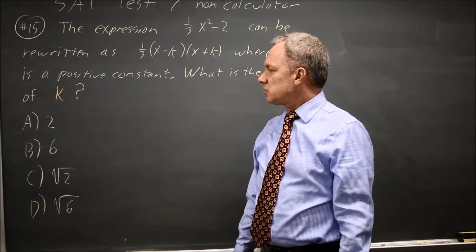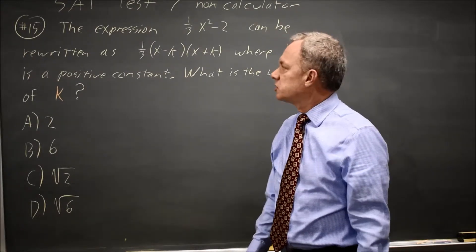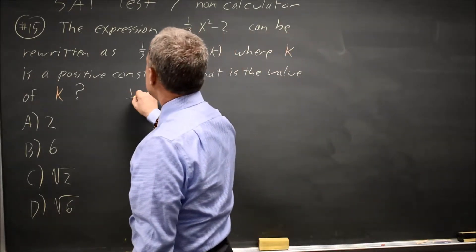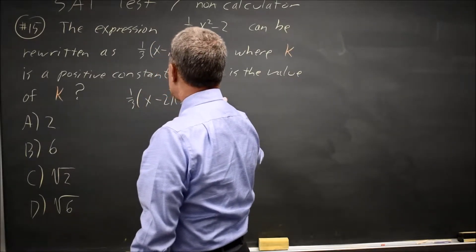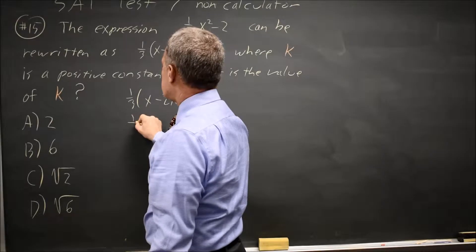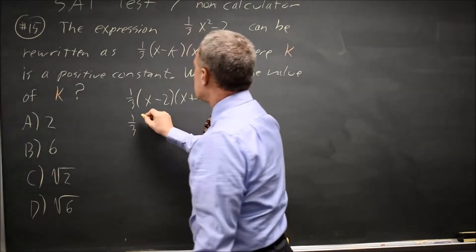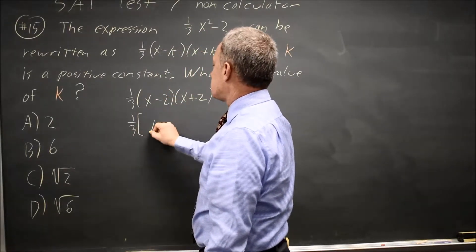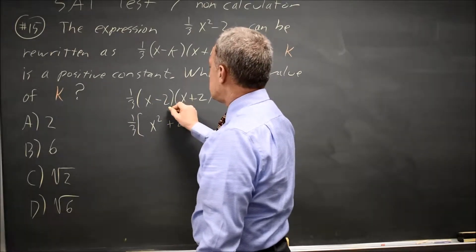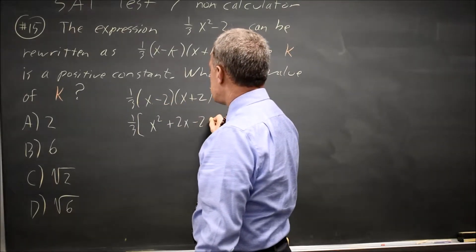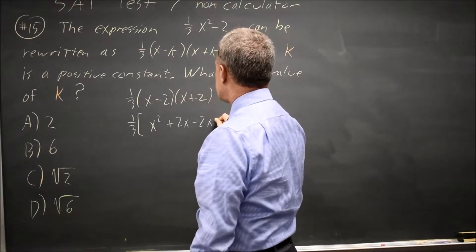If you find this hard, one option is to just substitute in the choices. So if I try 1/3(x - 2)(x + 2), that's choice A. That's 1/3, and then FOIL gives me x times x is x², x times positive 2 is plus 2x, negative 2 times x is minus 2x, and negative 2 times 2 is negative 4.